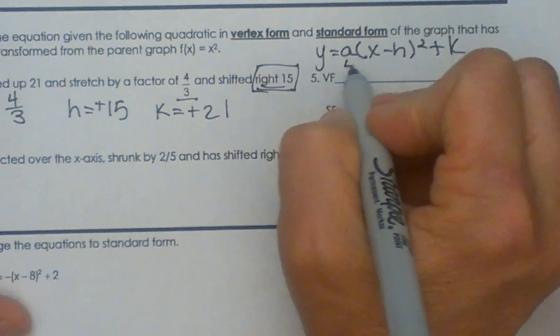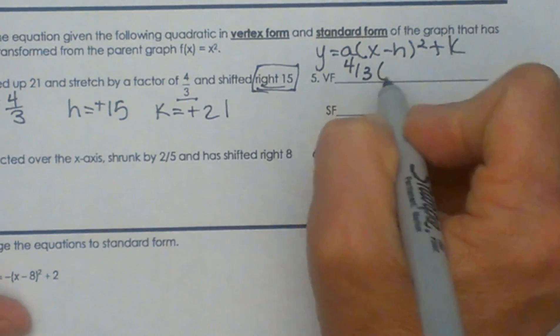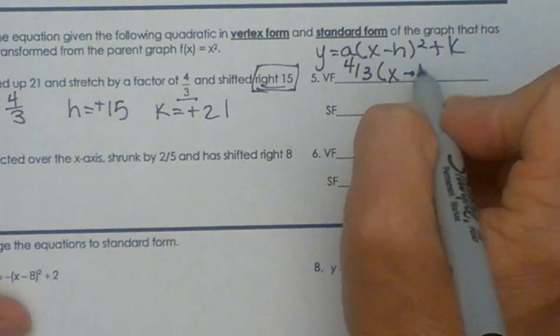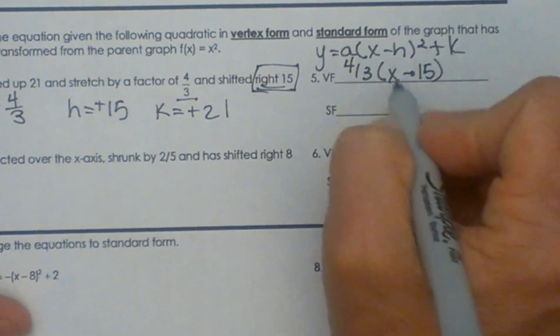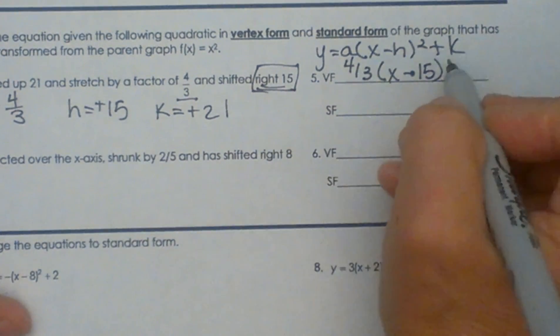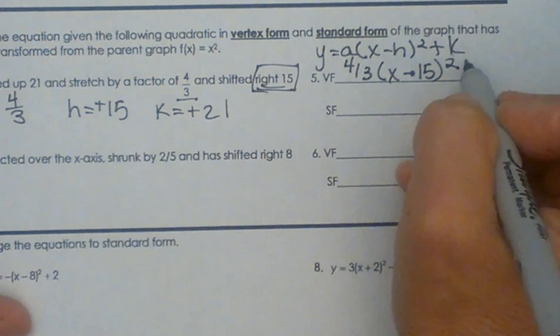So let's plug in a, h, and k, so that's 4 thirds times x minus 15. Notice this is positive 15 as my h, but in the equation it's a negative, squared, plus 21.